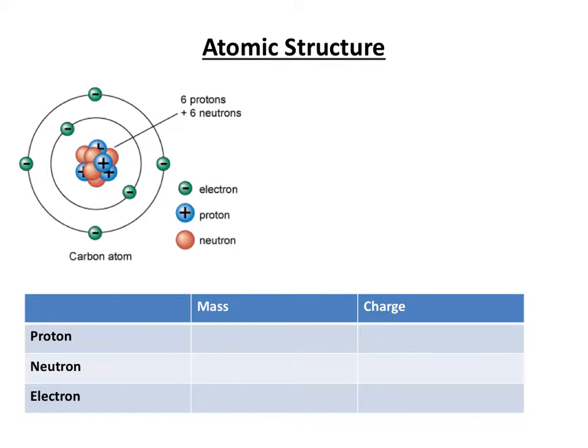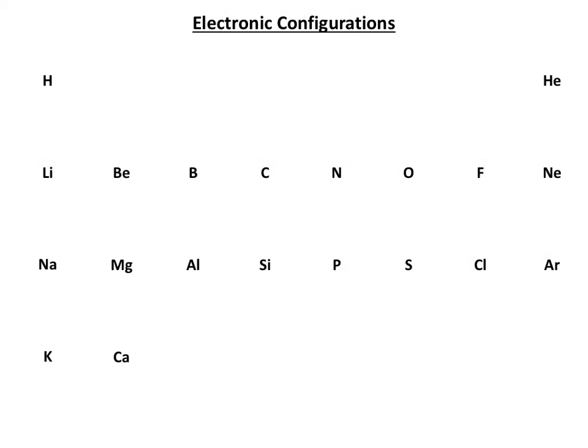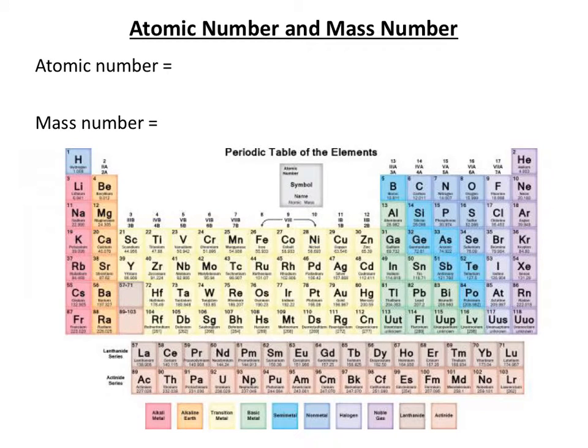Welcome to the second video on atomic structure for IGCSE chemistry. In this video we're going to look at atomic mass numbers and mass numbers of the atoms. It will be really helpful for this session or tutorial if you have a periodic table in front of you. I've got one here, but it will be useful if you have one there to refer to at all times, not just the one on this slide.